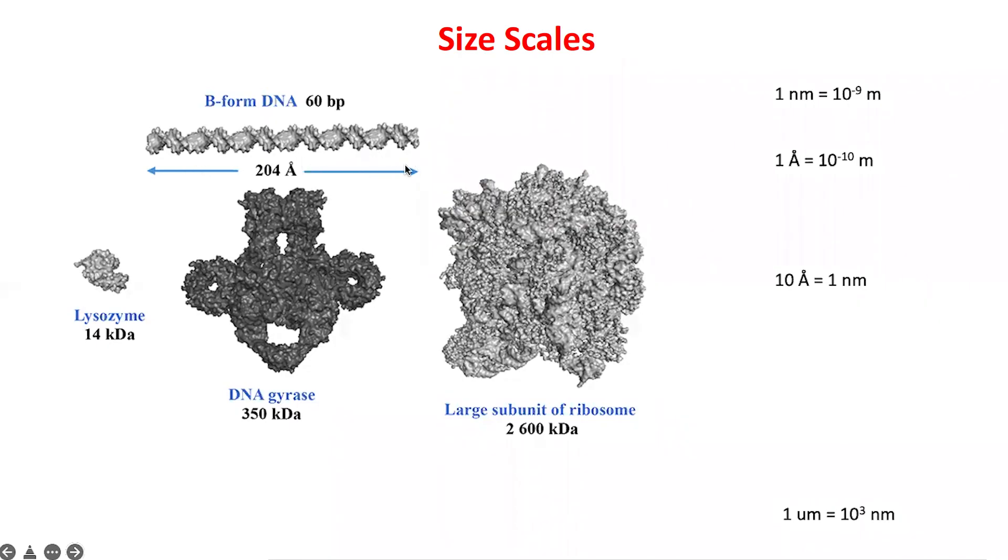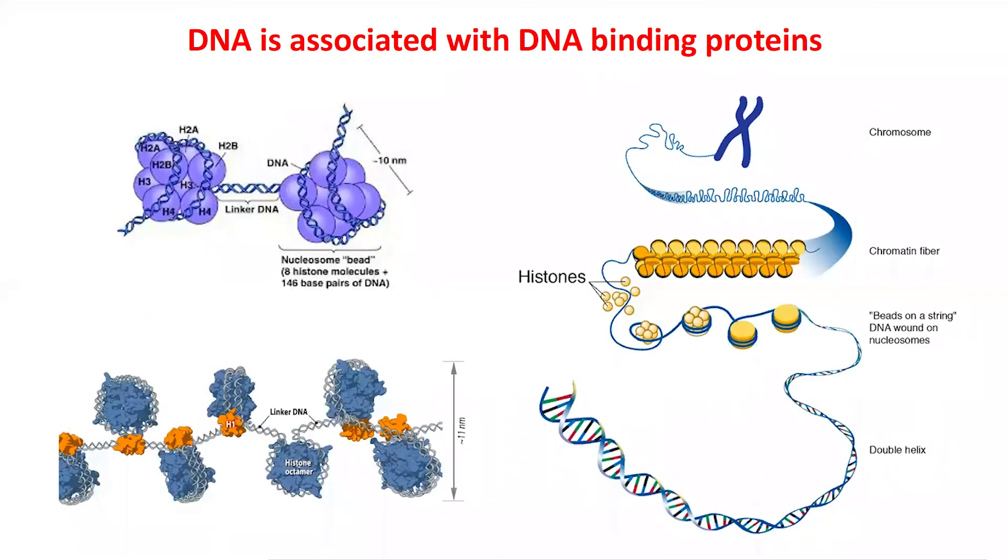These are three proteins: a small protein lysozyme, a middling protein DNA gyrase—you can see all these holes in DNA gyrase where DNA will actually slide through—and a large protein, one of the largest known in the cell, the ribosome. You can appreciate volume scales and size scales by looking at DNA with respect to gyrase, lysozyme, and ribosome.